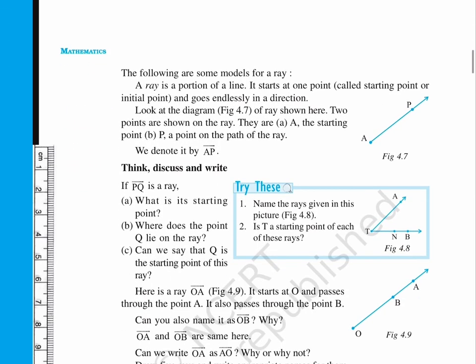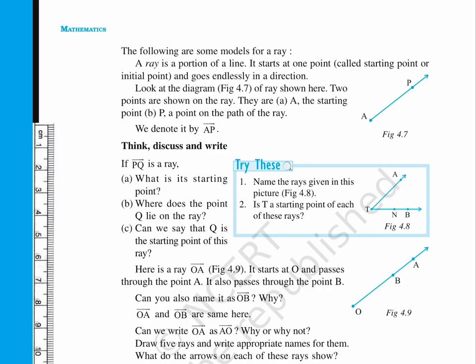A ray is a portion of a line. It starts at one point, called starting point or initial point, and goes endlessly in a direction. Observe the diagram, figure 4.7, of ray given here.